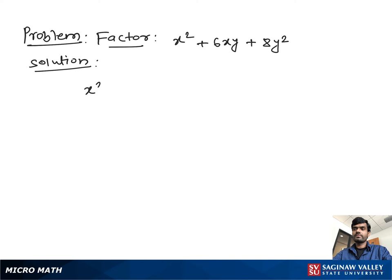Factor x² + 6xy + 8y². First, we multiply the coefficient of x² (which is 1) with the coefficient of y² (which is 8). We get 8.